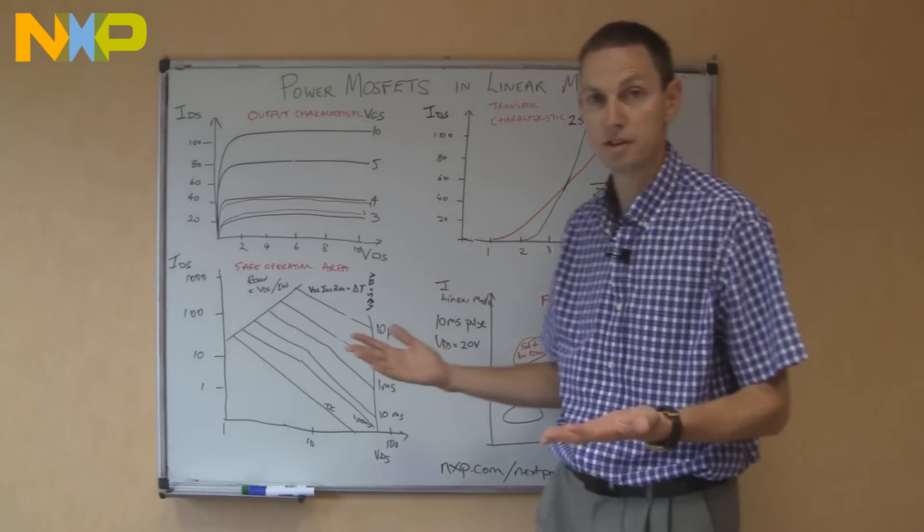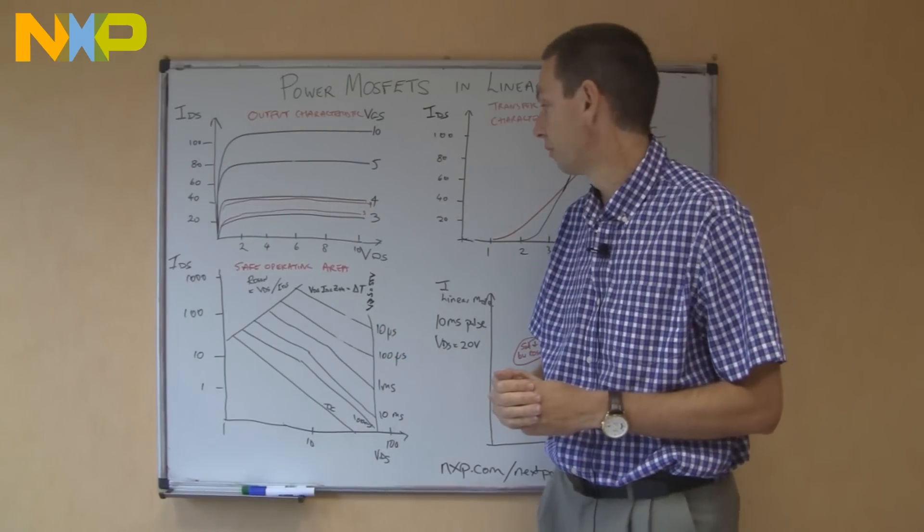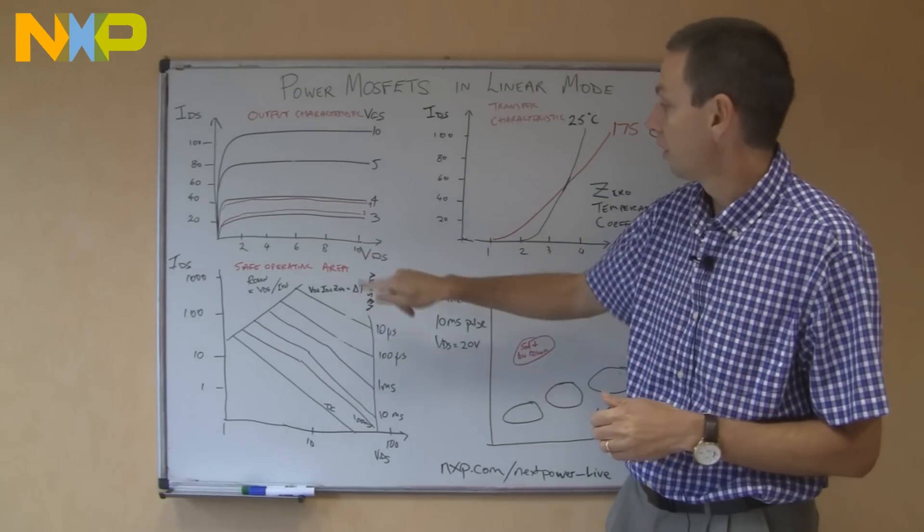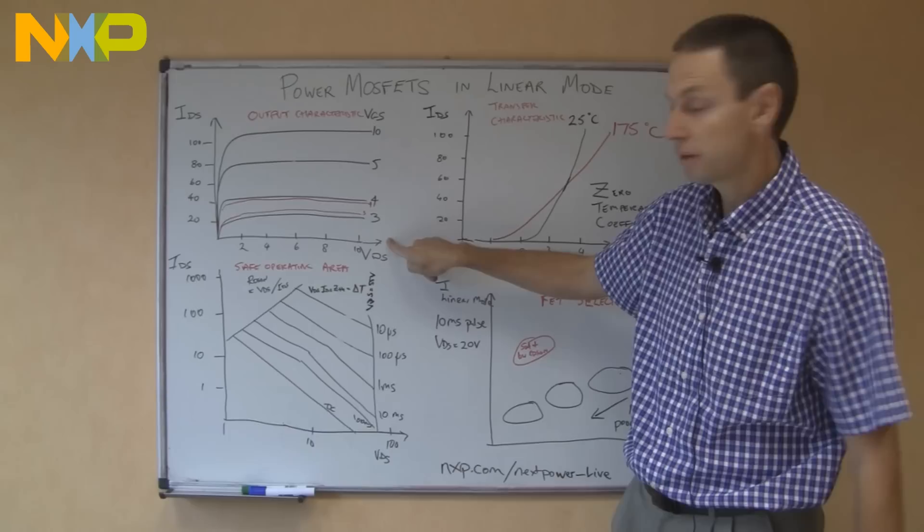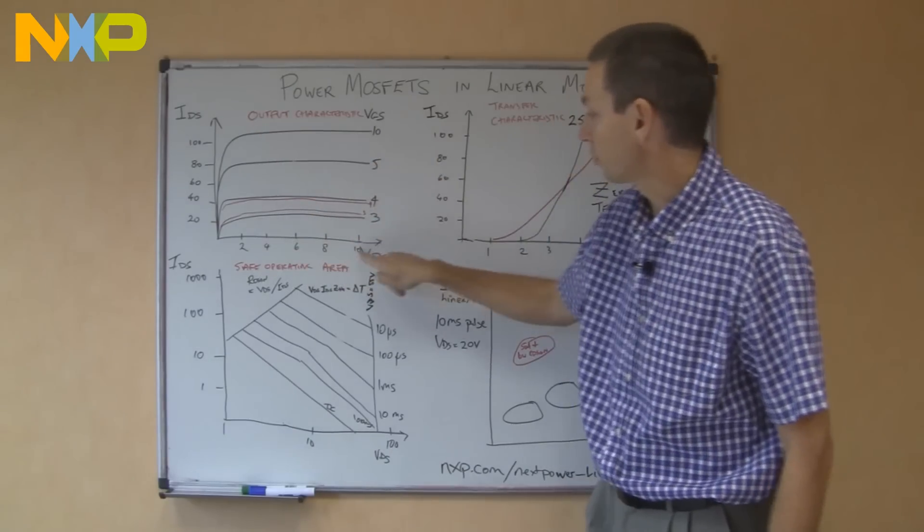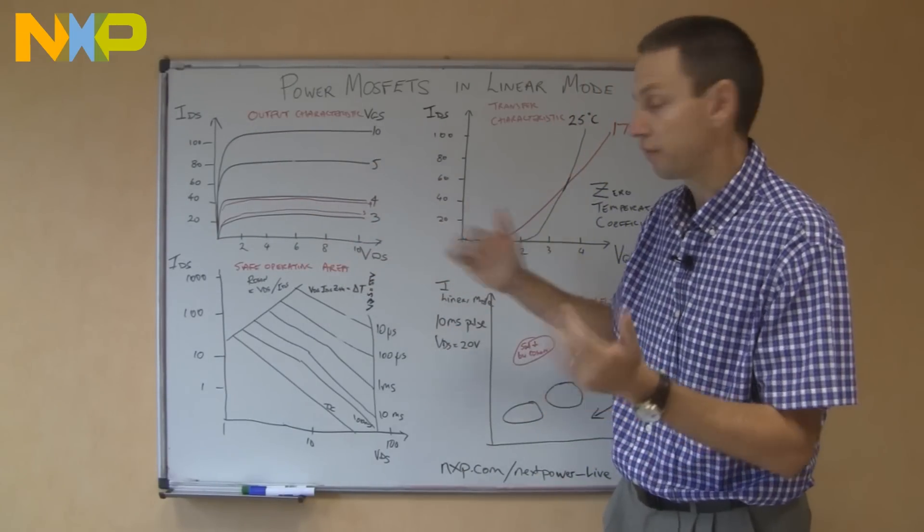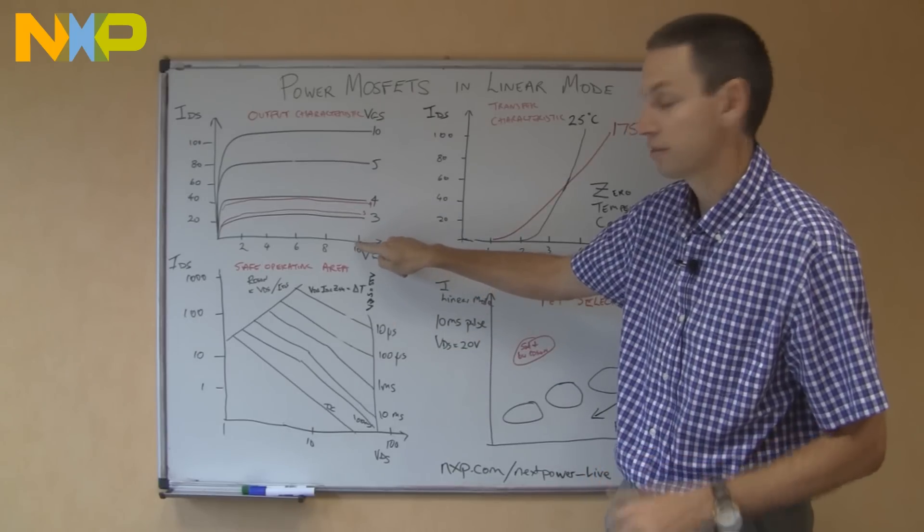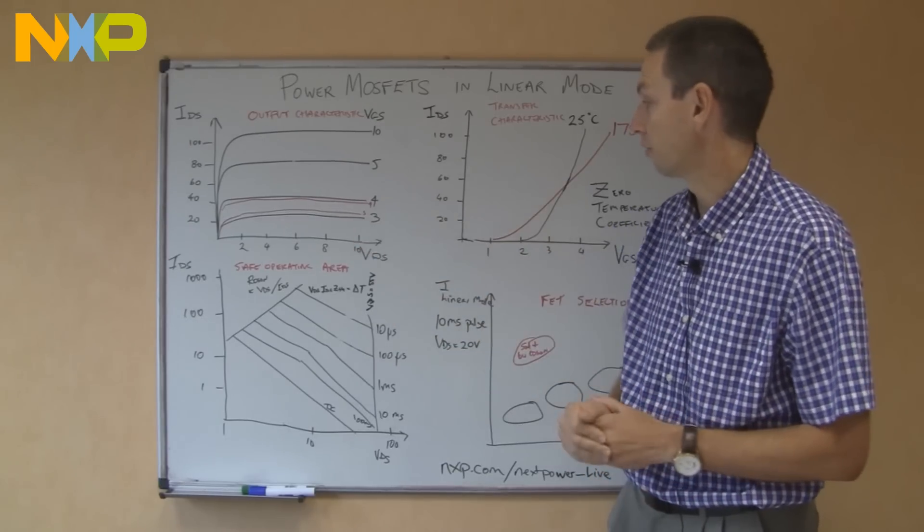Now normally a MOSFET is a switch, so you've either got the switch on or off. When the switch is off, we normally apply a very low gate bias, no current is flowing through the MOSFET, and across the MOSFET we have the whole voltage of the circuit. So typically you'd be in a position out here, no current flowing, a high voltage.